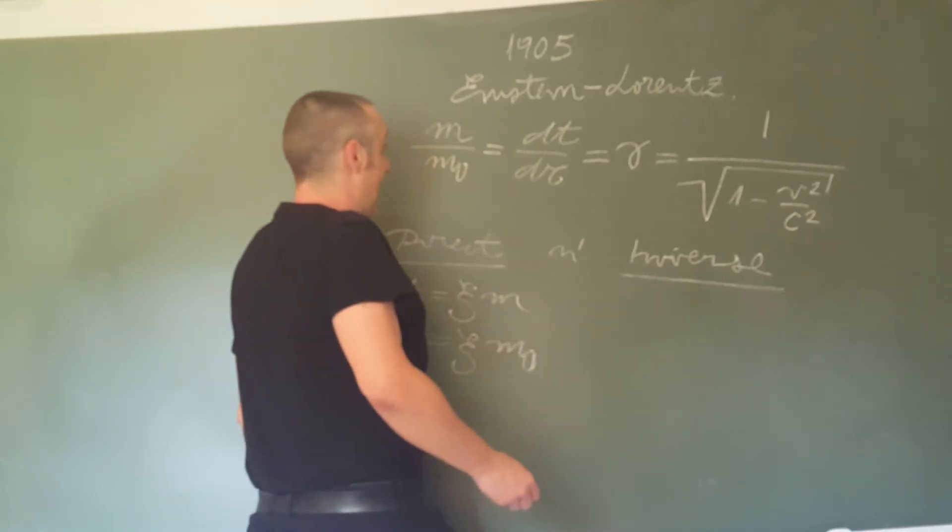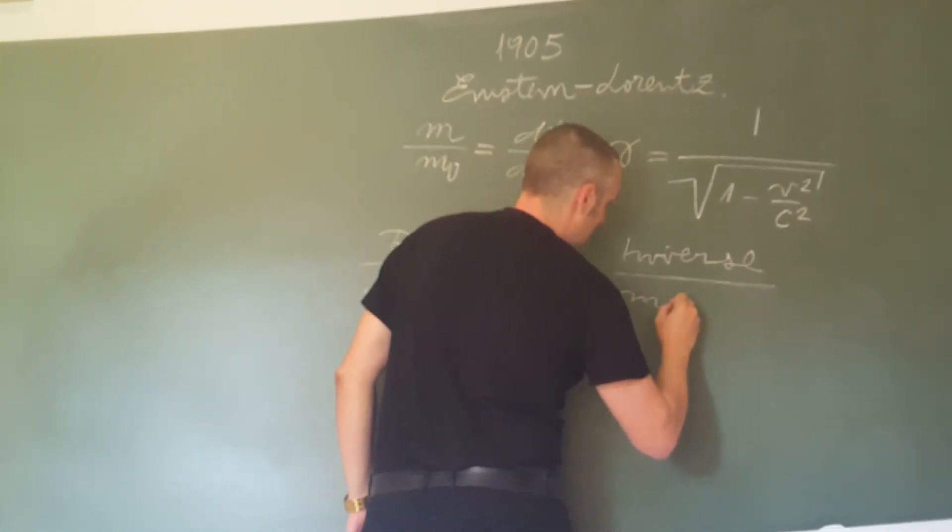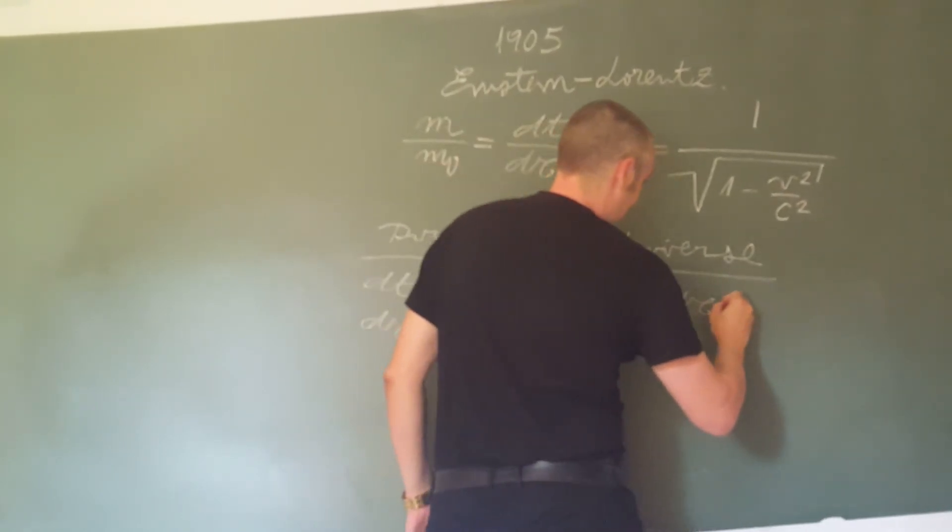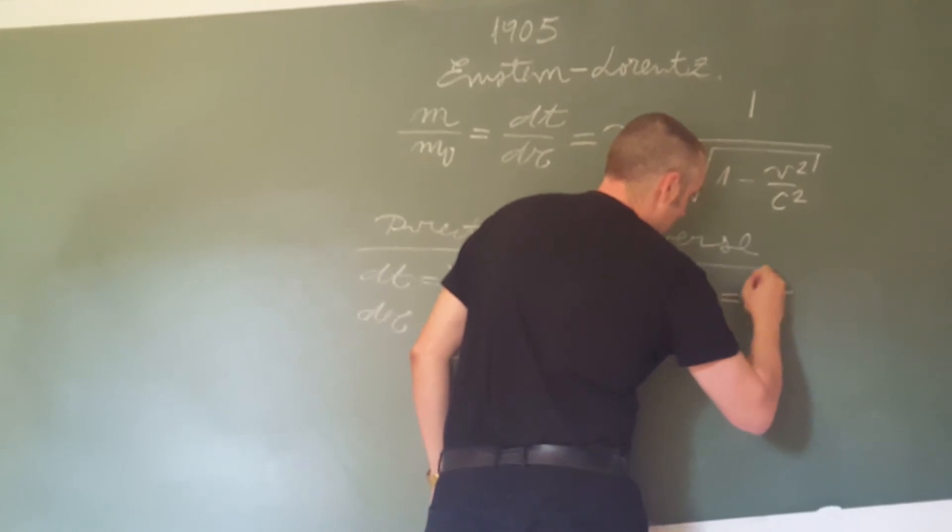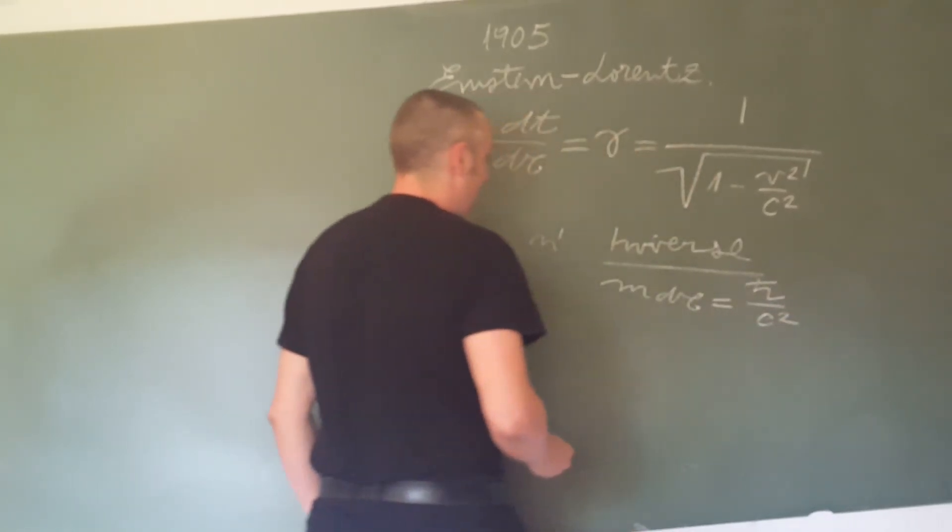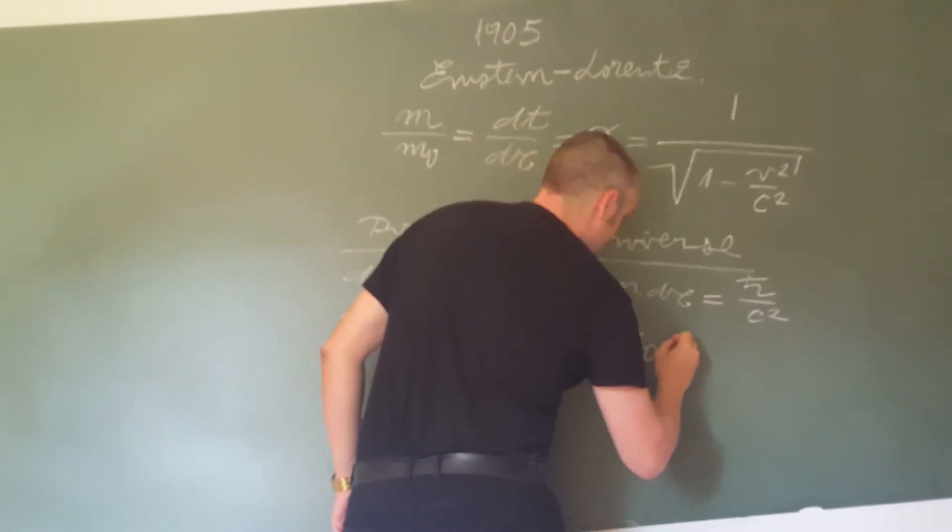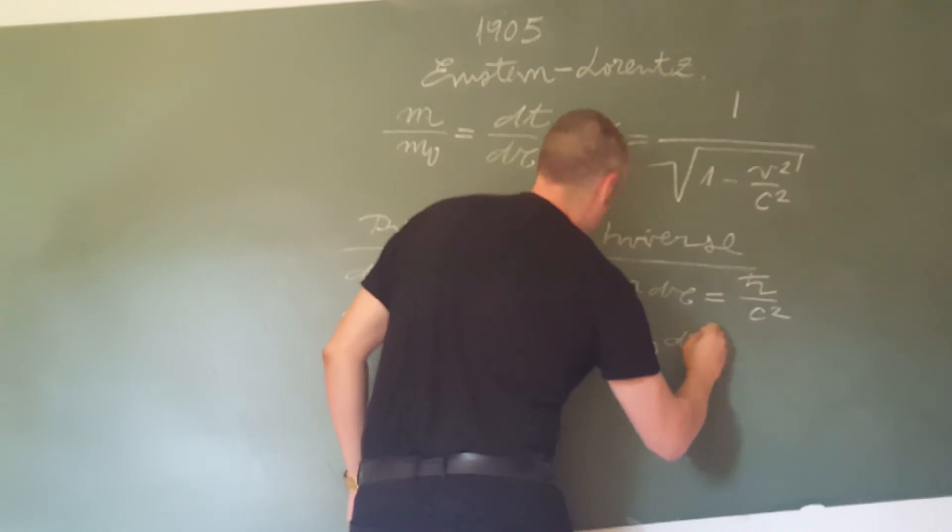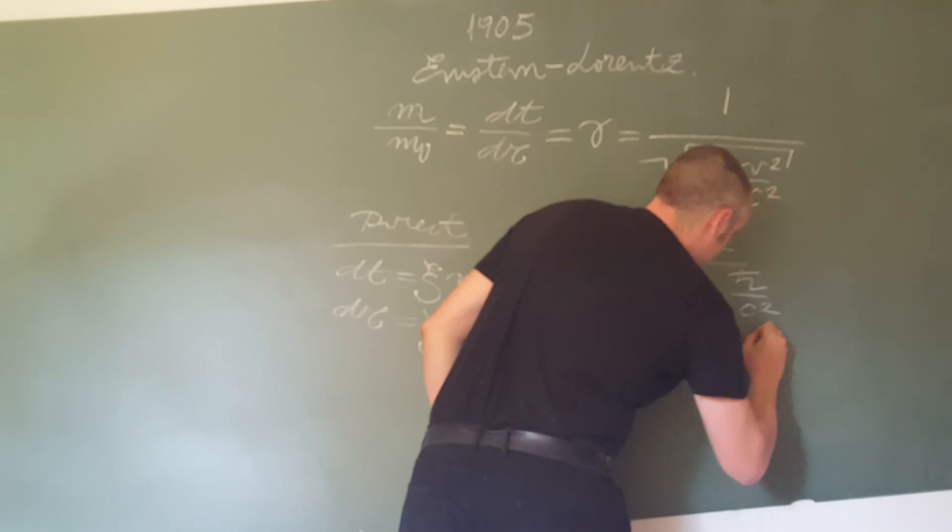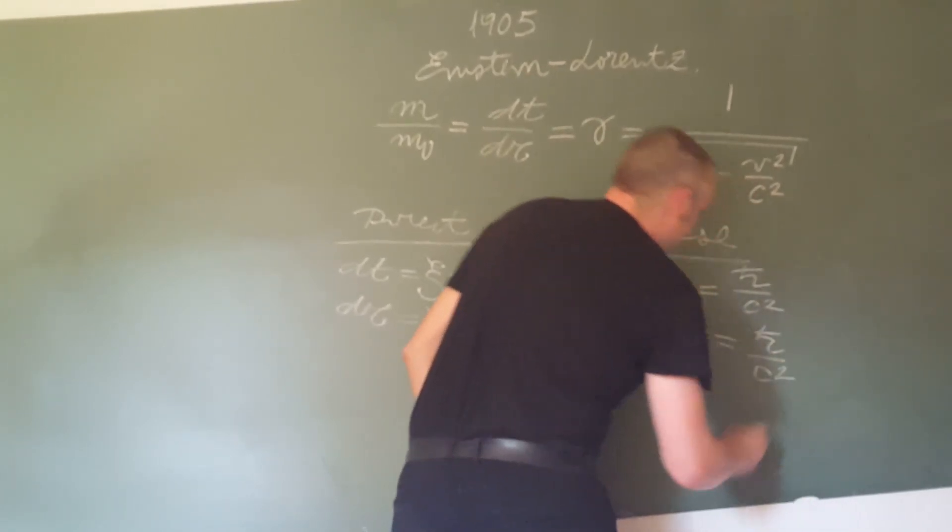The inverse relationship means that M·dT is equal to the Planck constant times the square of the speed of light, and also m₀·dt₀ is equal to the Planck constant divided by the square of the speed of light.